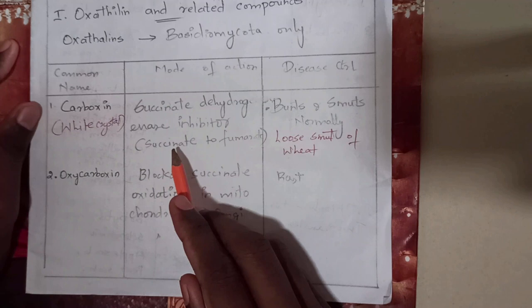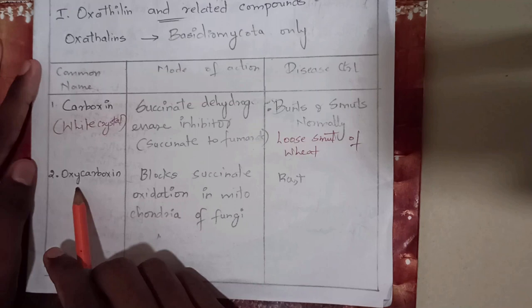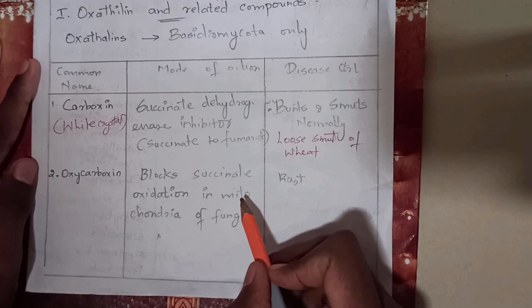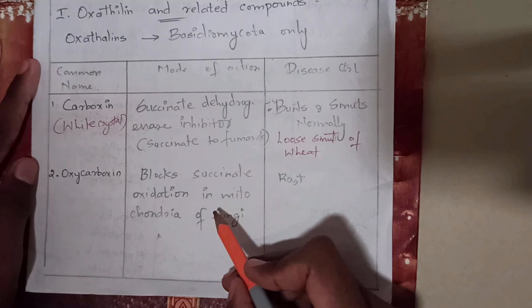Carboxyl reduces ATP formation in the fungus. The second compound is oxycarboxyl, used to prevent rust and many rusty diseases in vegetables, cereals, etc. Its mode of action blocks succinate oxidation in the mitochondria of fungi, reducing ATP production and thus the energy of the fungus.